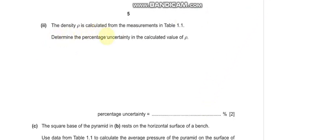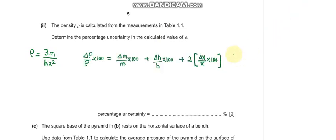Part 2 says: the density ρ is calculated from the measurements in table 1.1. Determine the percentage uncertainty in the calculated value of ρ. The formula for density gives us the percentage uncertainty by adding the percentage uncertainties of m, h, and two times the percentage uncertainty of x. Plugging in the values from the table, this turns out to be 16 percent.